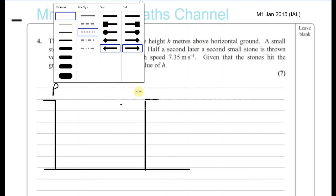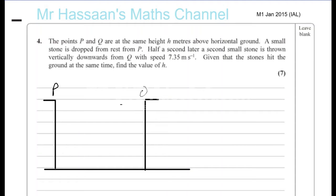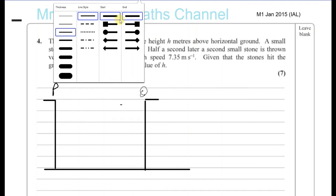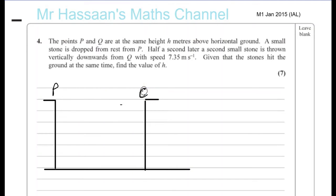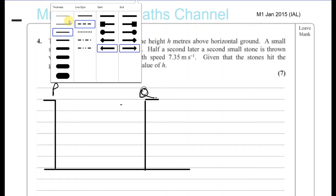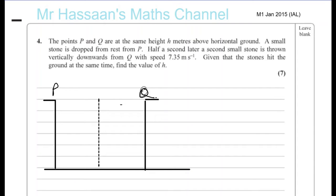That's the same distance, H. A small stone is dropped from rest at P — so it's going down with an initial speed of zero.